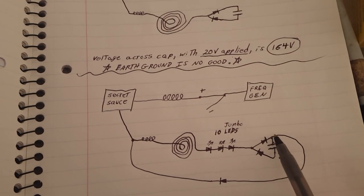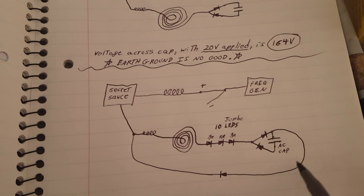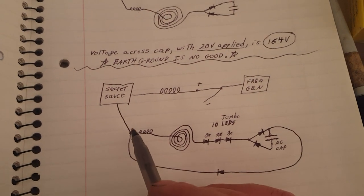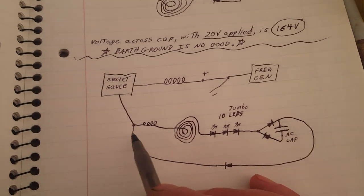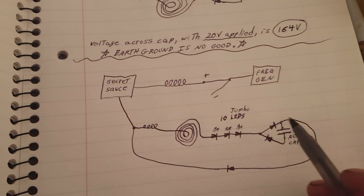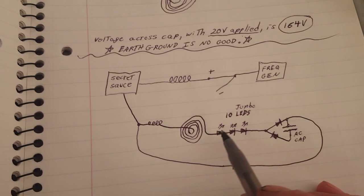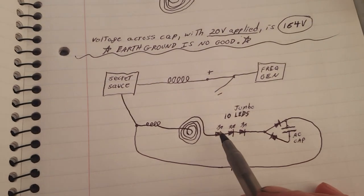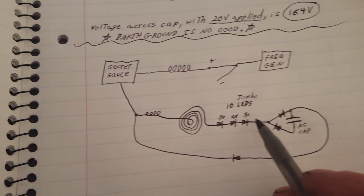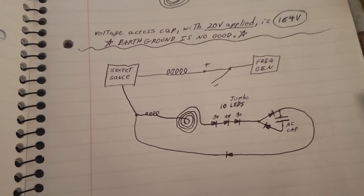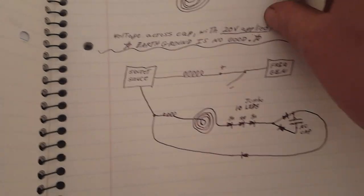And then I also have this end which loops around back over here, and that prevents my LEDs from burning out. Without this wire, this loop around, these LEDs over at this end will be so blinding bright and they'll burn out. These LEDs over here will be very dim.